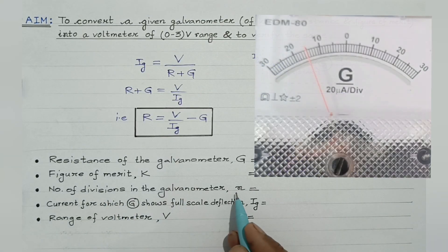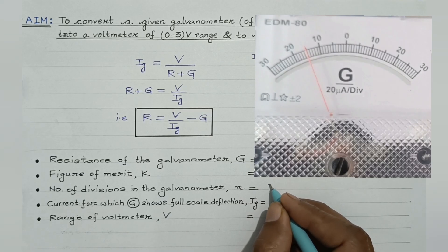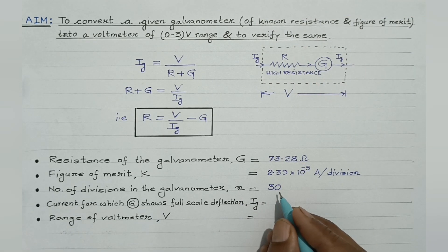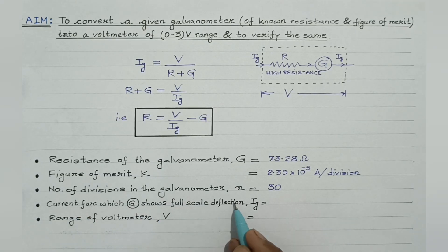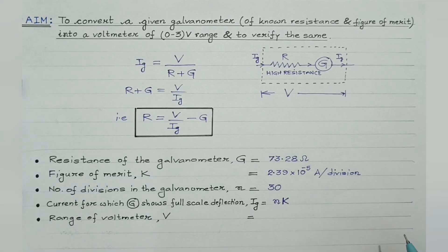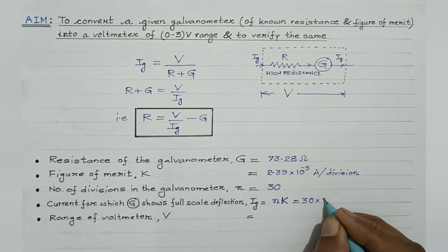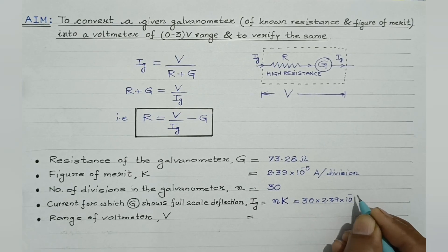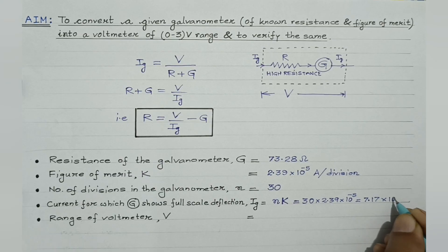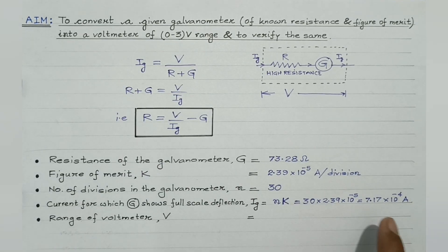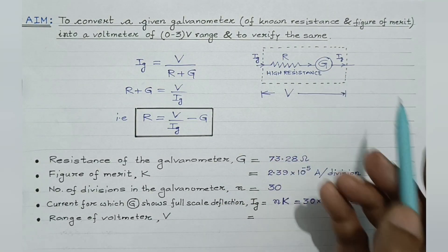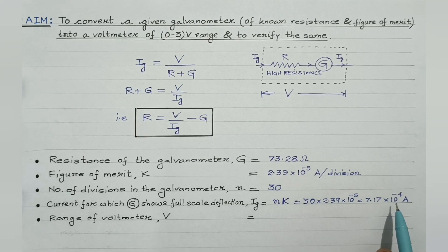The total number of divisions in the galvanometer on either side of zero is 30. The current for which the galvanometer shows full scale deflection, Ig, equals total number of divisions multiplied by figure of merit: N is 30 and figure of merit is 2.39 × 10⁻⁵. So Ig comes out to be 7.17 × 10⁻⁴ ampere. This is the maximum value of current that can be made to pass through the galvanometer.